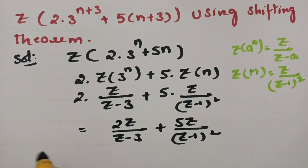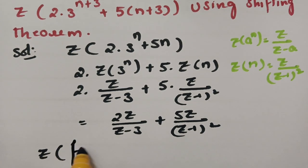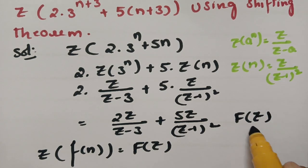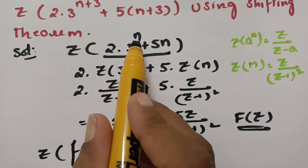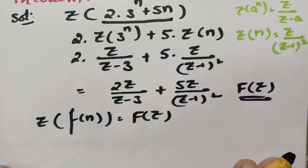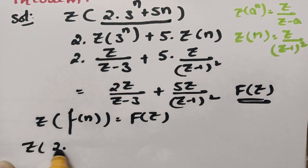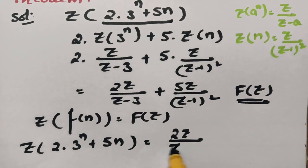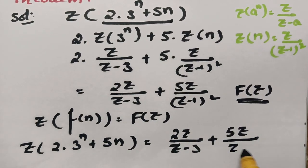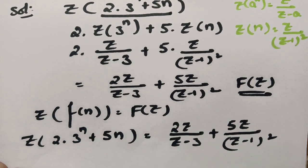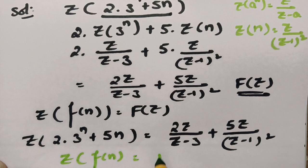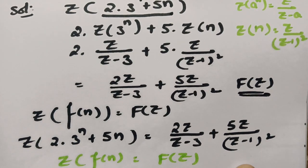So the Z transform of f(n) is capital F(z), where f(n) is 2·3^n + 5n. Therefore Z transform of 2·3^n + 5n is nothing but 2z/(z−3) + 5z/(z−1)^2. We write this as Z{f(n)} = capital F(z). So we have obtained the F(z) value, and now we have to use the shifting theorem.